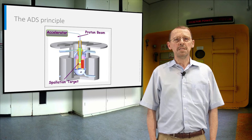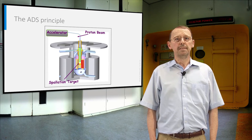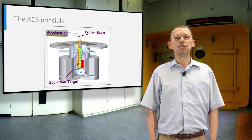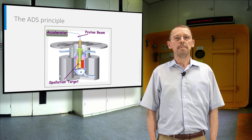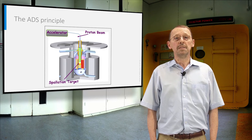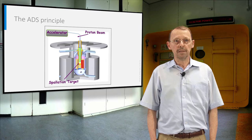An ADS consists of an accelerator sending protons with a high energy on a spallation target, which produces neutrons. The target is situated inside a subcritical core inside a reactor.